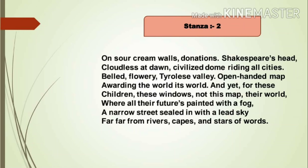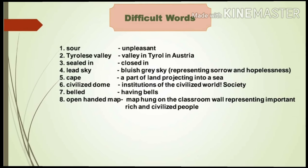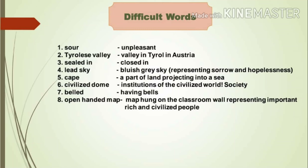Thus, the children are living a pathetic and morose life, and their future is completely painted with fog — their future is uncertain in this slum area. Here are some difficult words from the second stanza so that you can understand it in a much better way.